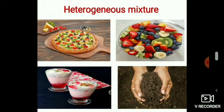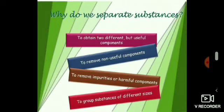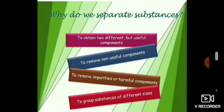We usually separate the components of a mixture to obtain two different but useful components, to remove non-useful components, to remove impurities or harmful components, and also to group substances of different sizes. Each component of a mixture has some property unique to itself shared by no other component. For example, sugar dissolves in water but oil does not dissolve in water, so sugar is a soluble substance and oil is an immiscible liquid with water. This difference in property is utilized to separate the various components from a mixture.